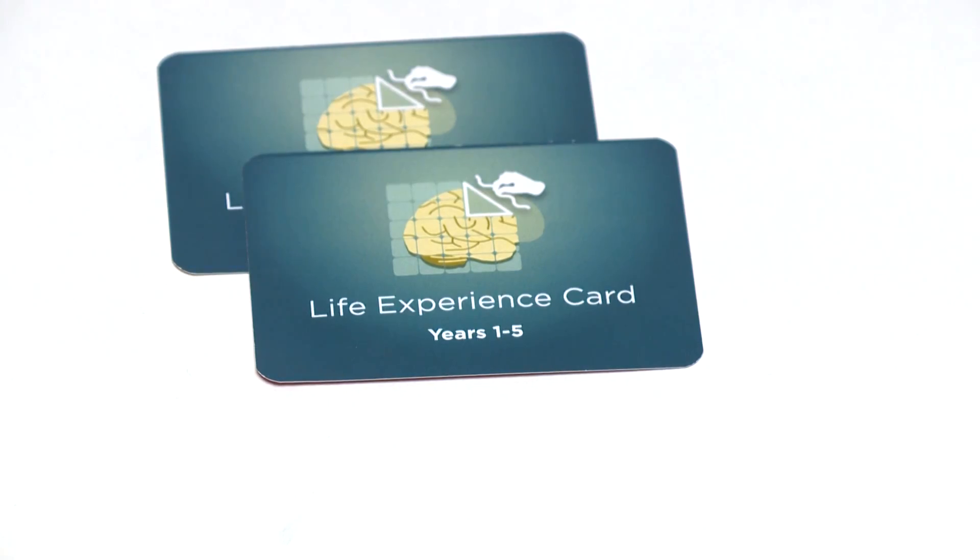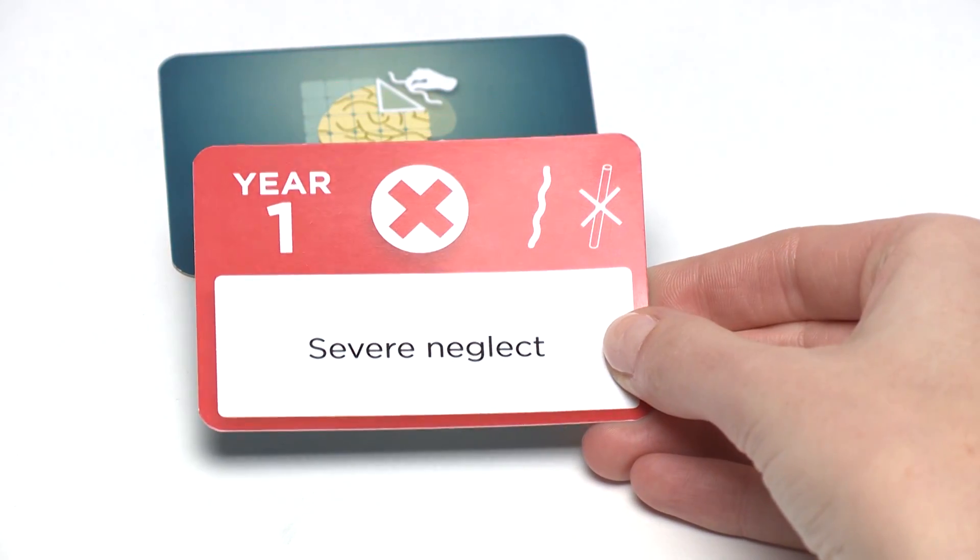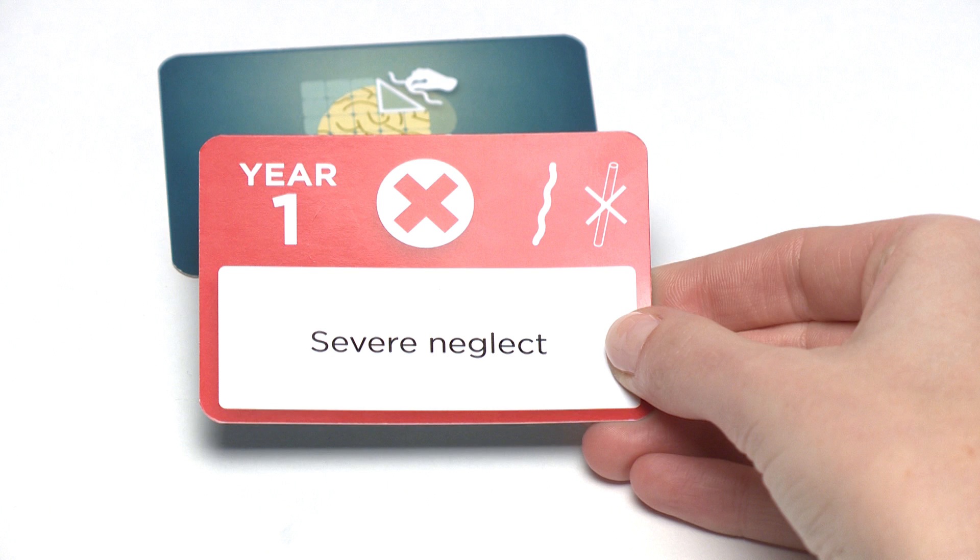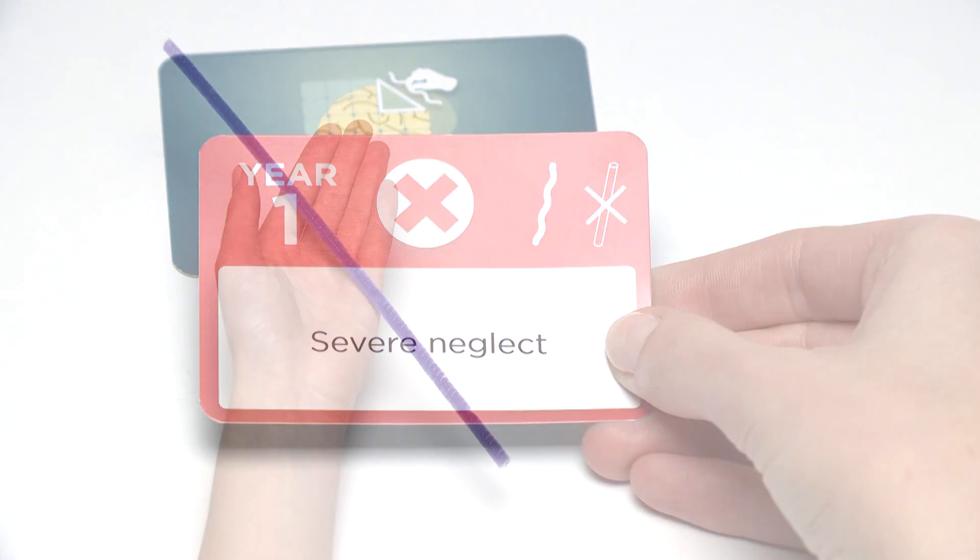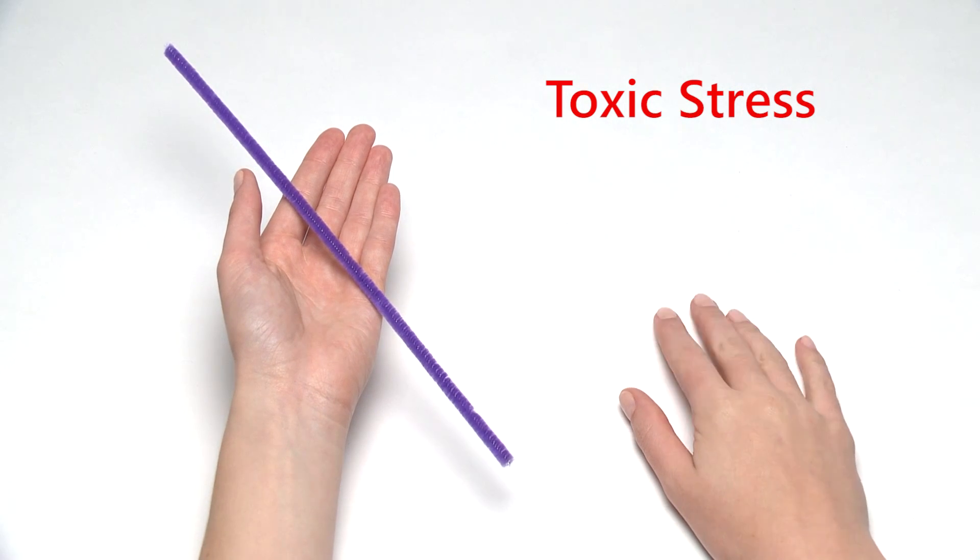What happens when you draw a toxic stress experience card? It's bad news for your brain because it weakens architecture. Whenever you draw a toxic stress experience, you get a pipe cleaner but no straw. Sorry!